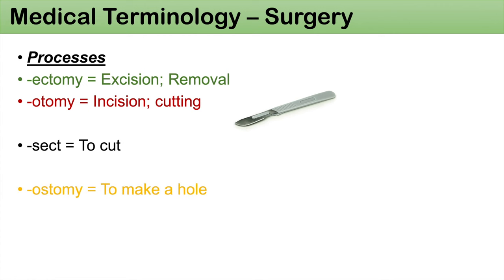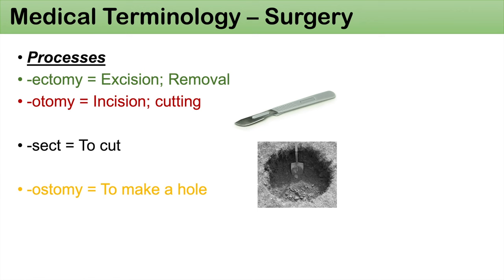Another suffix that we use often is -ostomy, which really means to make a hole. So you can think of ileostomy — to make a hole in the ileum. The prefix stome is related to ostomy; stome means artificial opening or hole. A stoma is generally referred to as an artificial hole that's made.